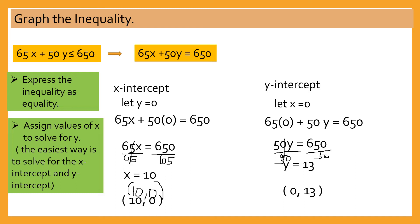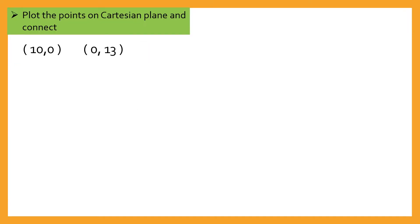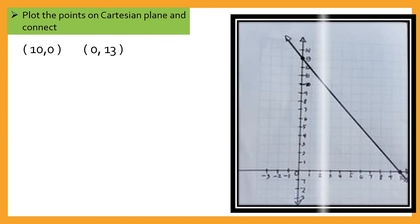What are we going to do next? Plot the points in the Cartesian plane — that's (0, 13) and (10, 0). Let's draw a solid line. Why a solid line? Because of the inequality symbol which is less than or equal — ibig sabihin, lahat ng points na makikita dito ay kasama siya sa solution.